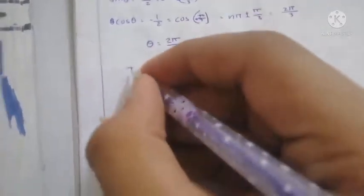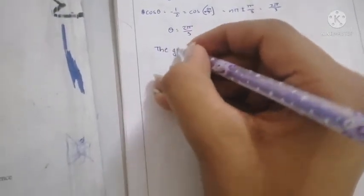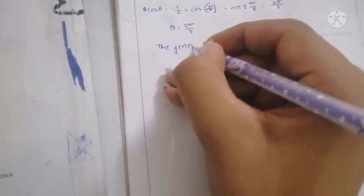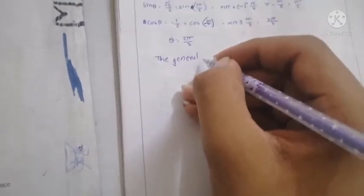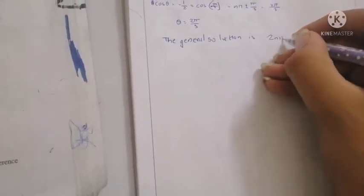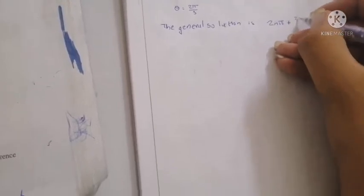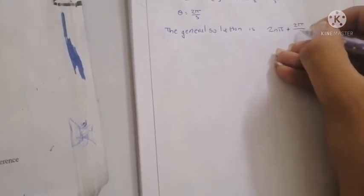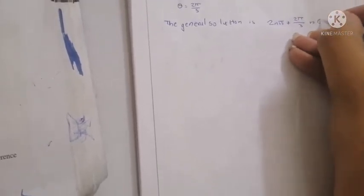The general solution for this question is 2nπ + 2π/3, where n belongs to integers.